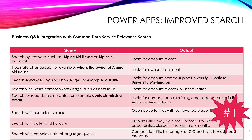In my experience, many, many users have trouble constructing queries using Advanced Find, trying to find the information they need. People just want to be able to type in what they're looking for and bring it back. So this is going to integrate business Q&A with relevant search, which means users will be able to do things like typing in who is the owner of Alpine Ski House.